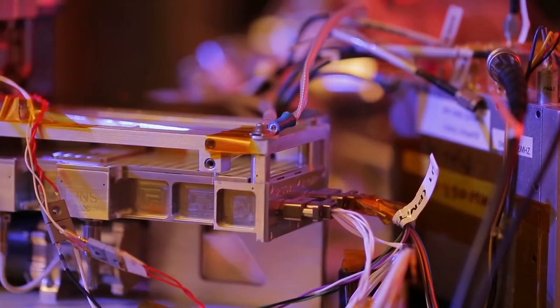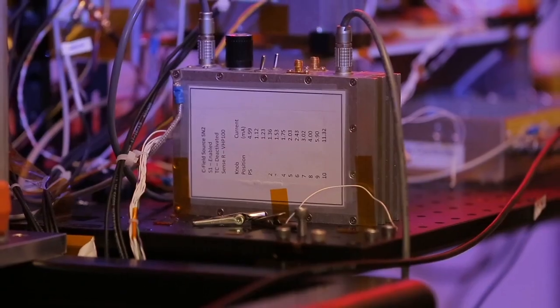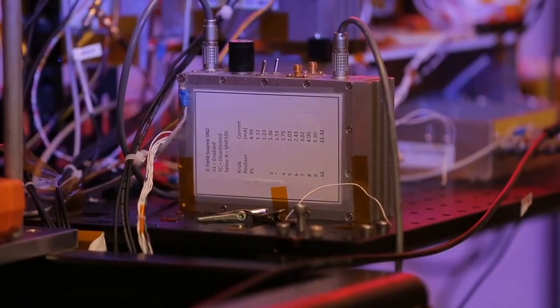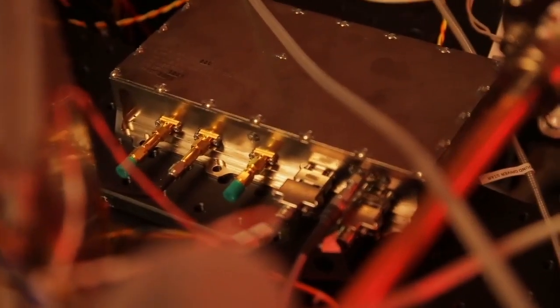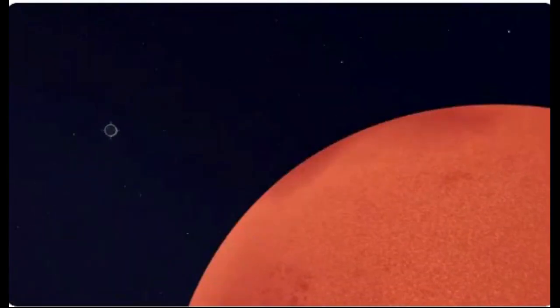Those updates come from more stable atomic clocks on the ground that are large, often the size of a refrigerator, and not designed to survive the physical demands of going to space.